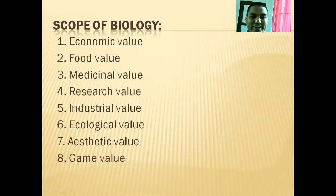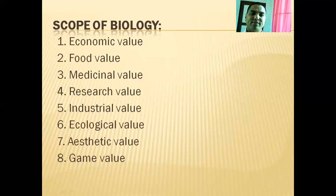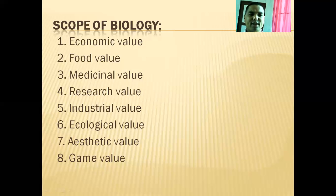Without knowing biology, how can we get food? How can we grow crops? How can we get fruits and vegetables? Our Nepal consists of numerous farmers. Our farmers have traditional biological knowledge — they know at what time to use what types of crops, what types of crops are planted in which season. So this is the knowledge of biology, and due to this knowledge we can get different types of foods, grow crops, and get fruits and vegetables.